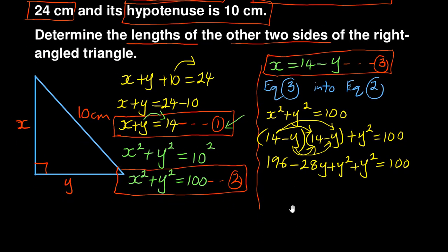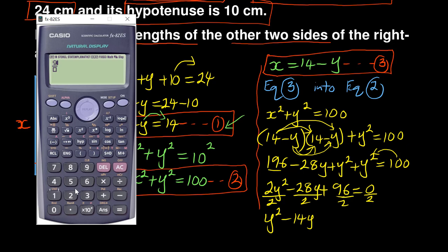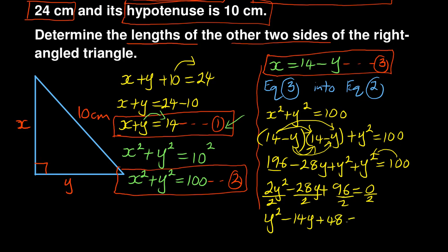Collecting like terms: y squared plus y squared is 2y squared, minus 28y, and then 196 minus 100 equals 96. So we have 2y squared minus 28y plus 96 equals 0. Dividing everything by 2 simplifies it further to y squared minus 14y plus 48 equals 0.